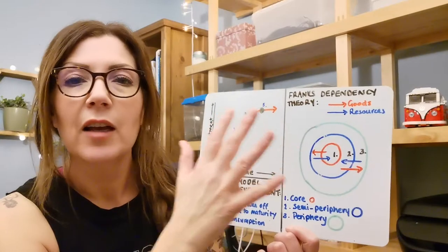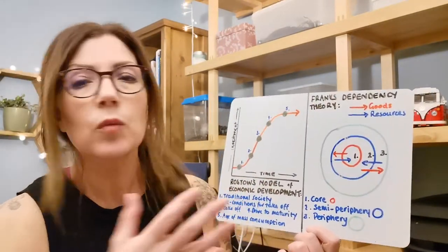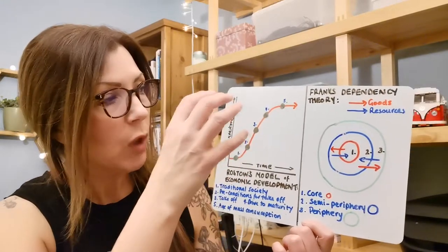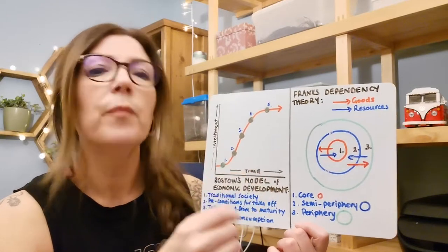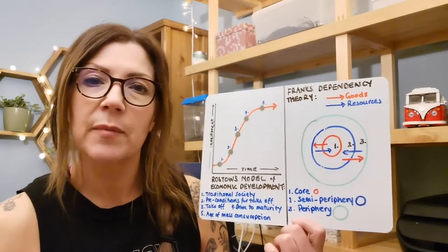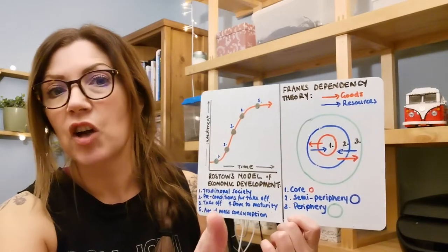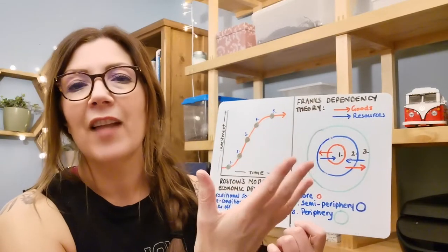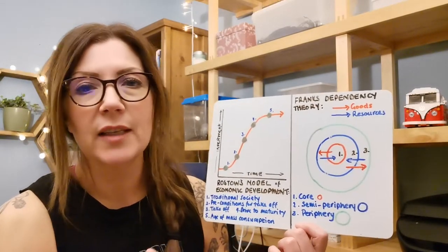And as we move into stage five, the drive to maturity as Rostow calls it, this is an economy like the UK or America or anywhere in Europe where we've mostly got tertiary jobs for people and there's lots of taxes being paid to the government. We're not manufacturing here anymore because we've sent it to China, but we were in stage four and the economy is fully fledged, good economic growth.